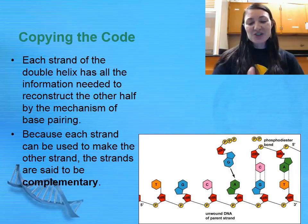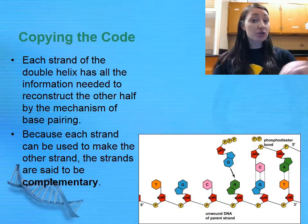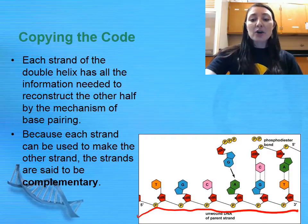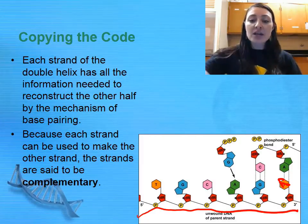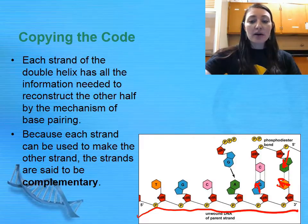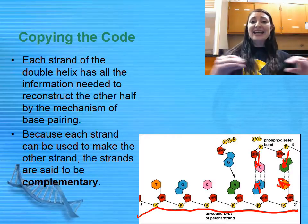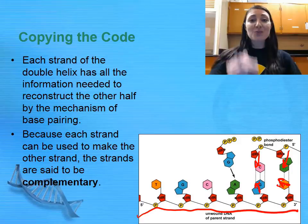Each strand acts as a complementary strand — or template — for the other. So each strand of your double helix has all the information you need to reconstruct the other half. Because I have a thymine on the template strand, I'm going to add a nucleotide that has an adenine. Next on my template is a guanine, so I need to add a cytosine, and so on. That parent strand acts as a template telling the replication machinery which nucleotide to add so that you make the correct base pairs.